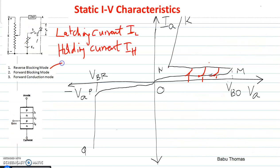So we discussed about the three modes of operation: reverse blocking mode, forward blocking mode, and forward conduction mode. Now two important parameters we have to discuss: latching current and holding current. Once the device goes into the turn-on condition and there is a flow of anode current, if that anode current is greater than a minimum value known as the latching current IL, then you can remove your gate circuit from the system. Without the gate signal, the device will not go into the turn-off mode — it will continue to conduct.